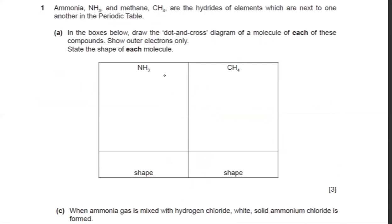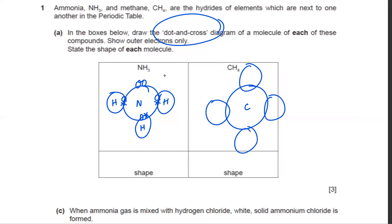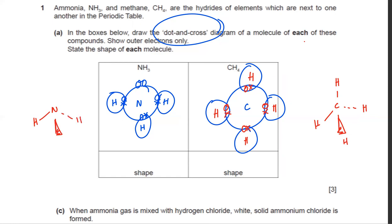Draw the dot-and-cross diagram and state the shape of NH3 and CH4. For NH3, nitrogen has a lone pair and three hydrogens bonded with single bonds. For CH4, carbon has four hydrogens around it. CH4 is tetrahedral, while NH3 has the same derived tetrahedral shape but with a lone pair on top instead of an atom — so NH3 is trigonal pyramidal.